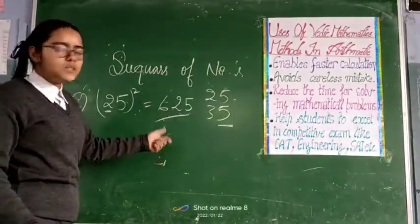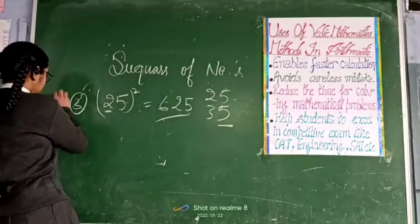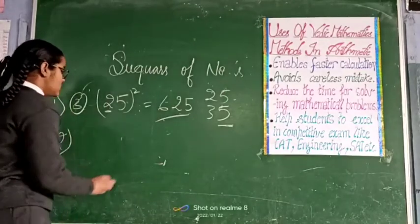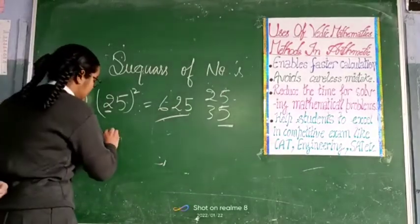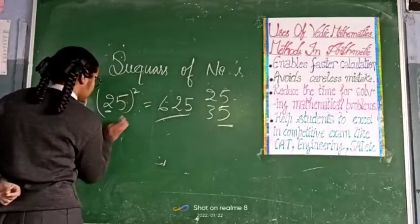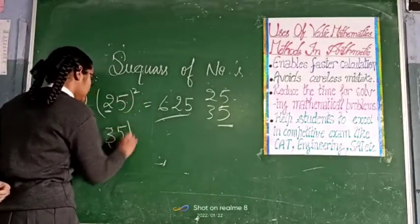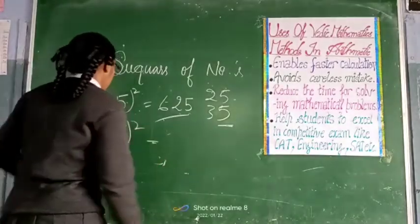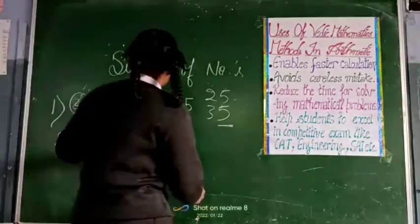If you take another example, just take 25 square, you take 35 square. It is square. 2, 5.